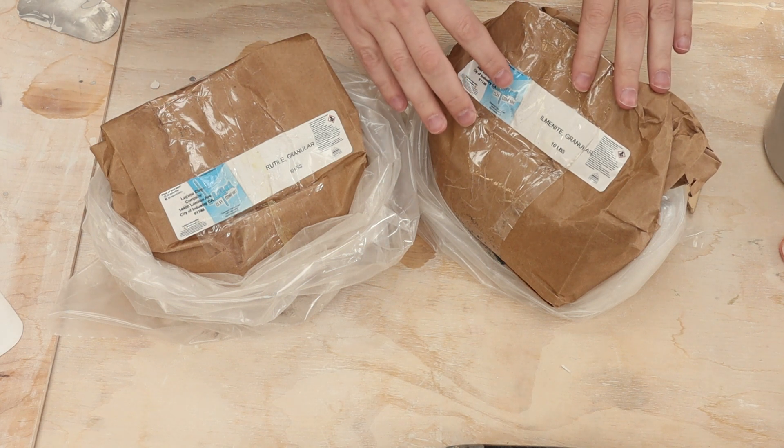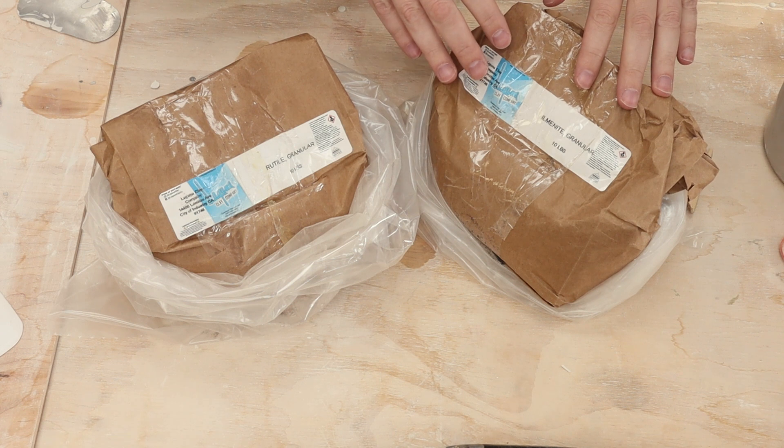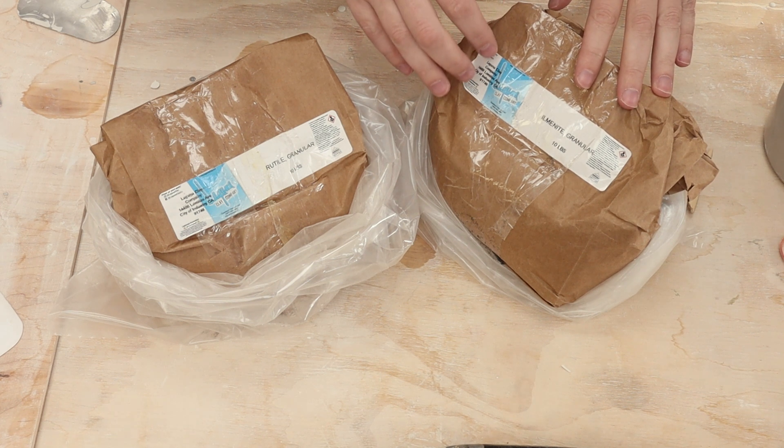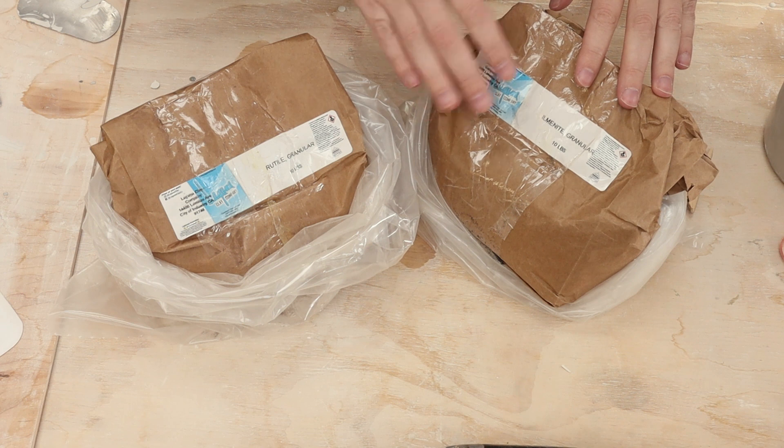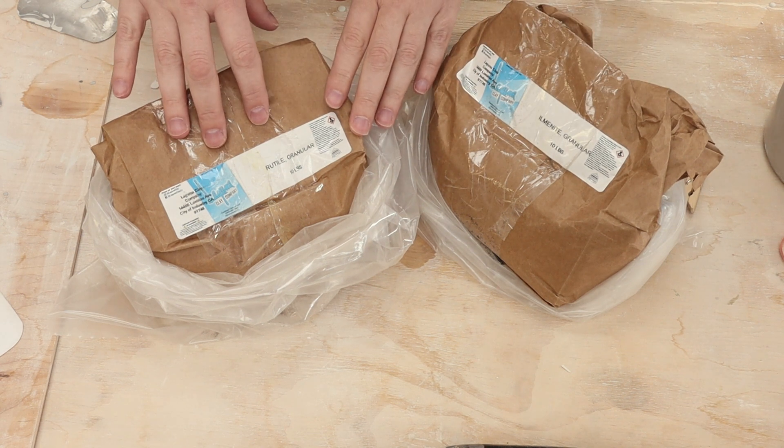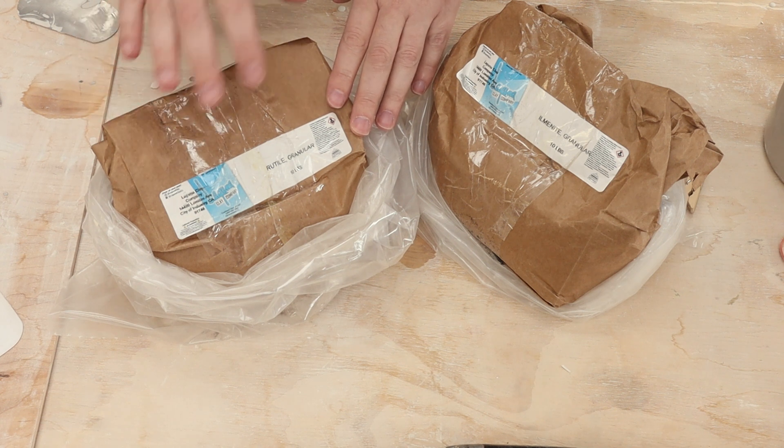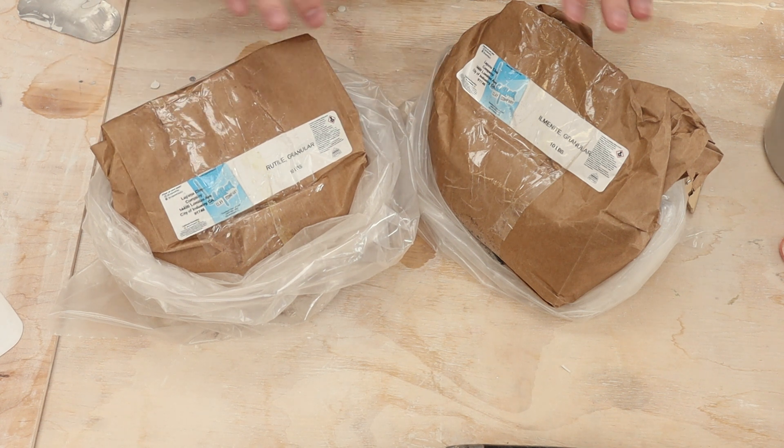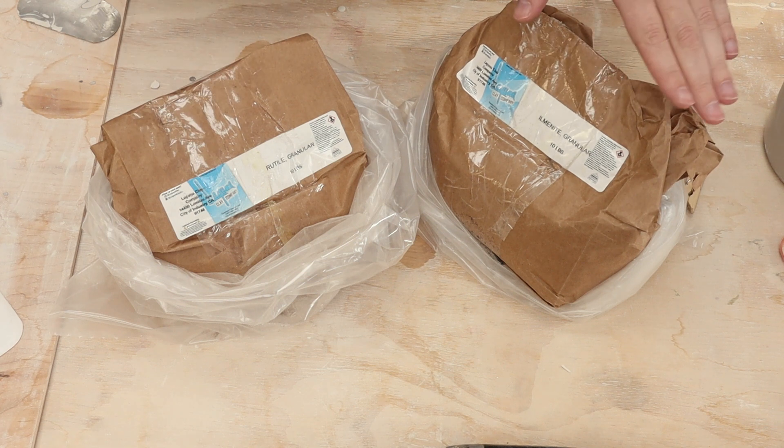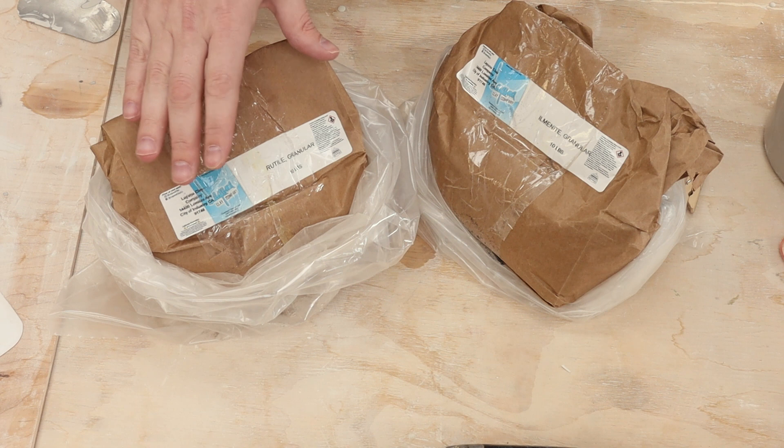So this one, ilmenite, from what I can tell will create small black speckles in the final clay body. It doesn't melt at cone 5-6 where I'm firing, and from what I understand, this rutile will melt slightly and so it'll spread out a little bit and form brown speckles. So I'm going to do these one by one. I'm going to start with the ilmenite and then we will go ahead and try the rutile.